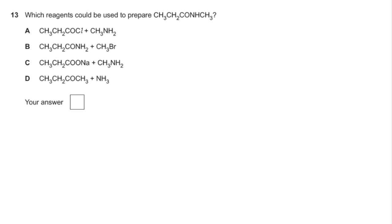Number 13, so this one's testing our knowledge of organic reaction pathways, so look at that big synthesis map. The molecule we're trying to prepare is an amide. How do you make amides? You can make them from an acyl chloride and an amine. Well, that's what we've got in A, so that's the answer.